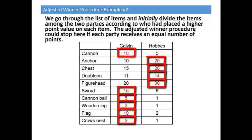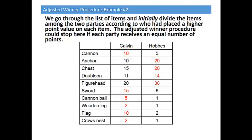This is our initial distribution of items. We then add up the number of points that each party feels they have currently received. Calvin, with the cannon, sword, cannonball, wooden leg, flag, and crow's nest, currently feels that he has 44 of his points. Hobbes, on the other hand, with the anchor, chest, doubloon, and figurehead, currently feels that he is walking away with 84 points.